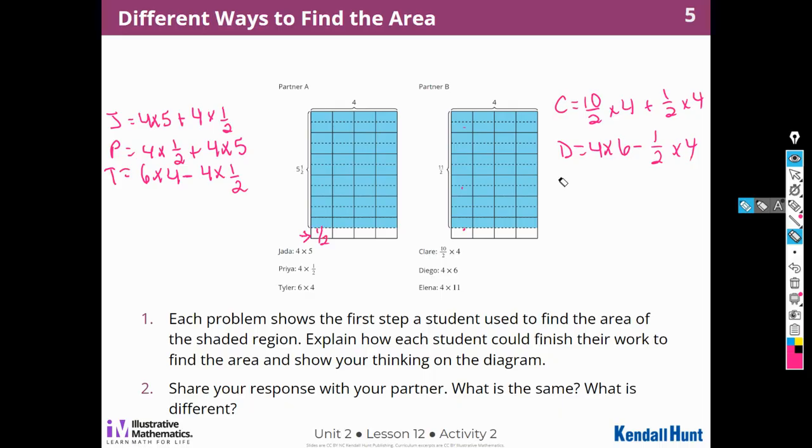All right. Now I'm going to look at Elena. Elena has 4 times 11. So I see that instead of 5 and a half, partner B has 11 over 2. That's 1, 2, 3, 4, 5, 6, 7, 8, 9, 10, 11 halves, right? And we can write that 11 over 2. So Elena started with 4 times 11. So what should she do to get the half part? What should she do? That's interesting. Should we do 4 times a half again? What would give us 4 times 11 halves?